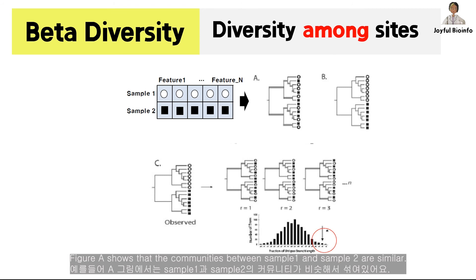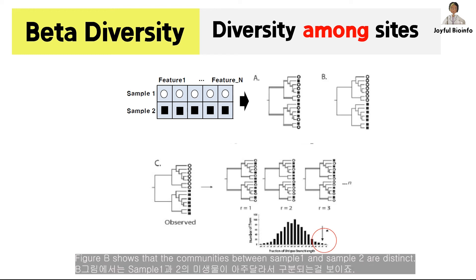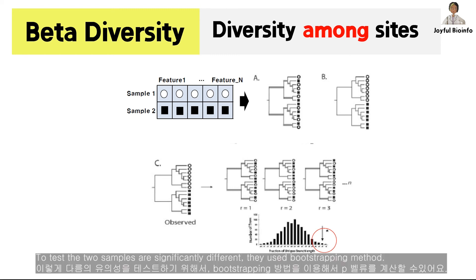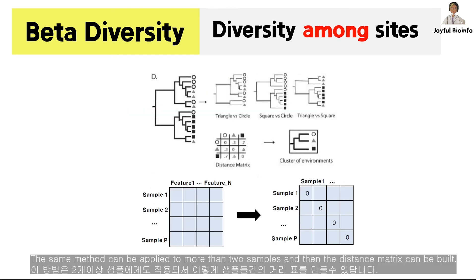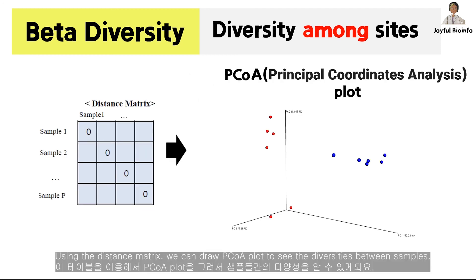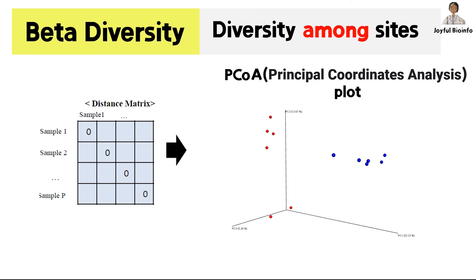Figure A shows that the communities between sample 1 and sample 2 are pretty similar. Figure B shows that the communities between sample 1 and sample 2 are very distinct. To test if the two samples are significantly different, they use a bootstrapping method. The same method can be applied to more than two samples, and then the distance matrix can be built. Using the distance matrix, we can draw a PCoA plot to see the diversities between samples.